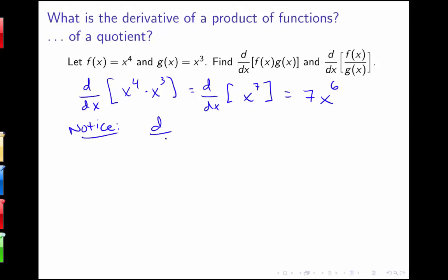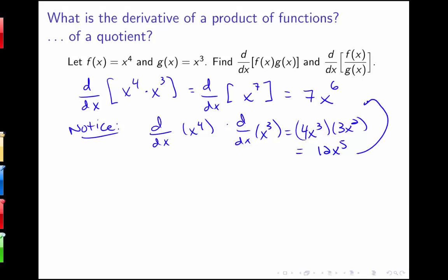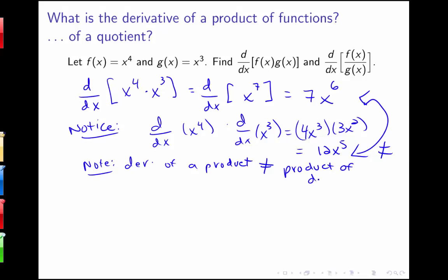Notice that if I had tried to just multiply their individual derivatives together, I would have had 4x cubed times 3x squared, which would give me 12x to the fifth, which is not equivalent to 7x to the sixth. So note that the derivative of a product is not going to be equal to the product of the derivatives. This indicates that our rule for the derivative of a product is not going to be as simple as just multiplying those individual derivatives together.